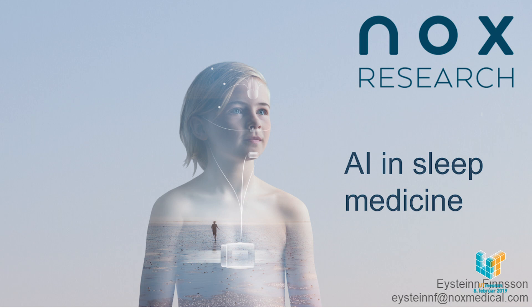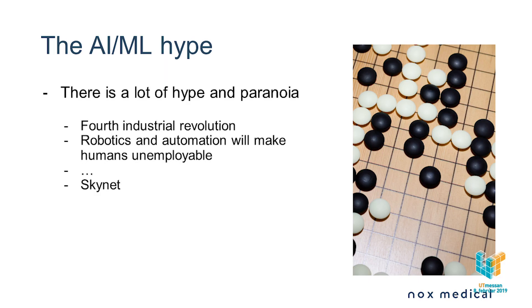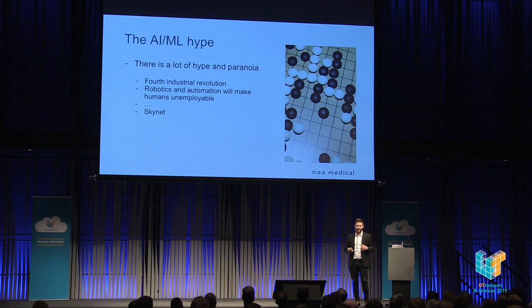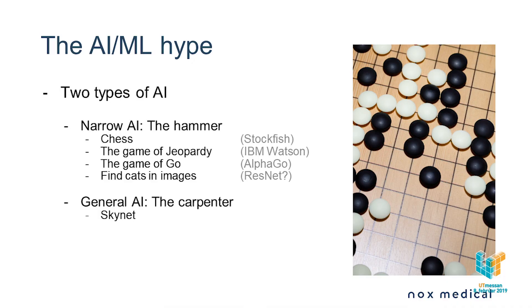This is the nitty-gritty of AI. There's a lot of hype in AI and machine learning — talk about the fourth industrial revolution, how robotics will eventually make humans obsolete, we'll end with a singularity and all that jazz. But that's not really how we in the field see things. We see two types of AI. We have narrow AI, which is a tool made for a specific task. This task could be playing chess, playing Go, driving cars, finding something in images, etc.